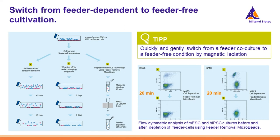But what to do if you are still using a feeder co-culture system? There are several methods to switch from feeder to feeder-free conditions. The removal of feeder cells can be done by selective adhesion, taking advantage of the preferential adherence of feeders to uncoated culture plates, or by weaning off the feeder cells over several passages, or by magnetic separation. The first two approaches are time-consuming and do not always manage to remove all feeder cells, whereas magnetic isolation targeting feeder-specific markers is much faster and simpler.